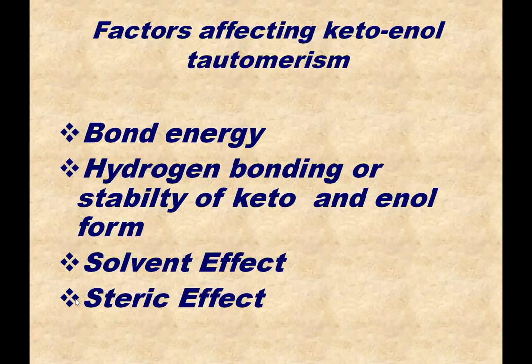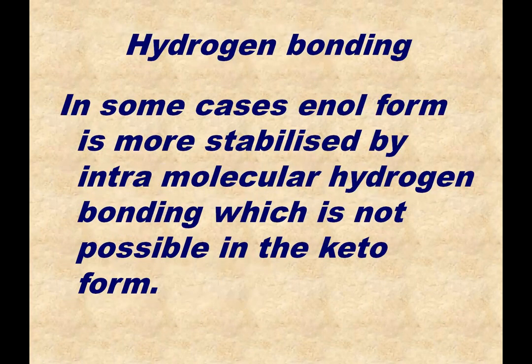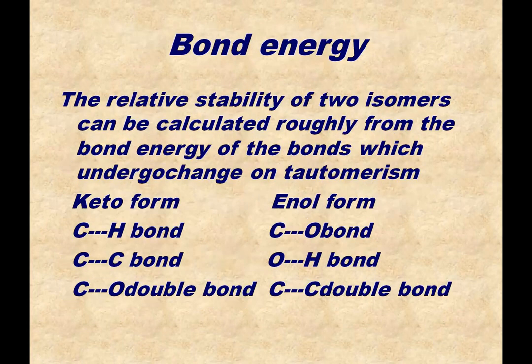Now we will discuss these factors in detail one by one. The first factor is bond energy. The relative stabilities of two isomers, that is keto and enol form, can be calculated roughly from the bond energies of the bonds which undergo change on tautomerism.